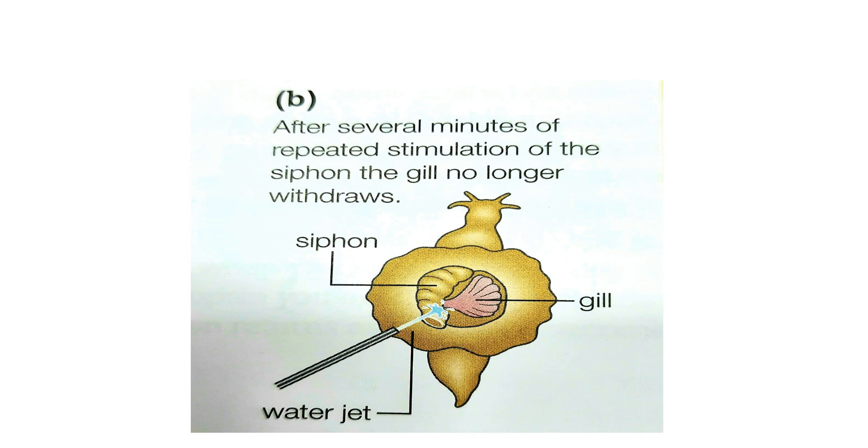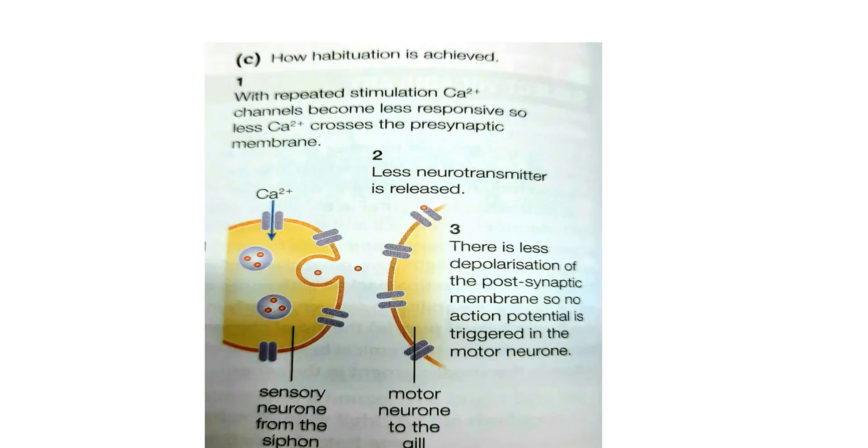So after several minutes of repeated stimulation, it will no longer withdraw. What is happening at the level of the synapse of these cells of the sea snail? It's about all about calcium voltage-gated channels and the release of neurotransmitters in the synaptic cleft.